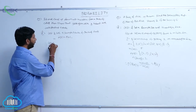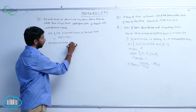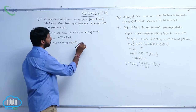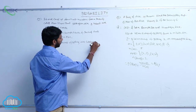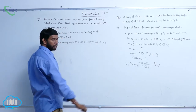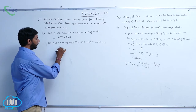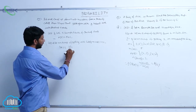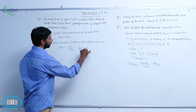Let capital A be an event of getting ace cards. That implies N(A) = 4C1 = 4. Therefore P(A) = N(A) by N(S) = 4C1 by 52C1 = 4 by 52 = 1 by 13.